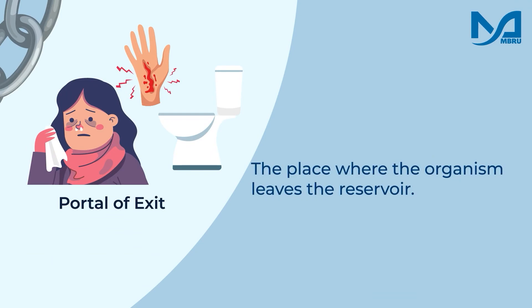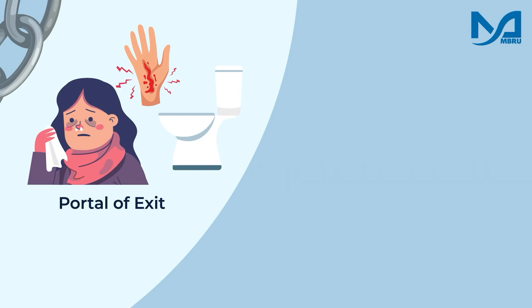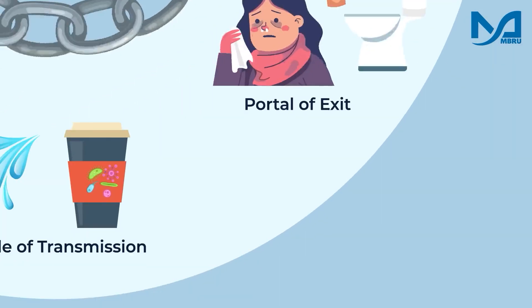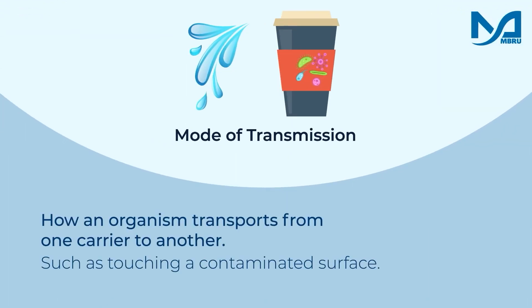Then we have the port of exit, which is the way the agent leaves the body. This can happen through the mouth if a person coughs or sneezes, through a cut if a person is bleeding, or during diaper changes or toileting. The next element is the mode of transmission, which is how the infectious agent is transmitted from one person to another.